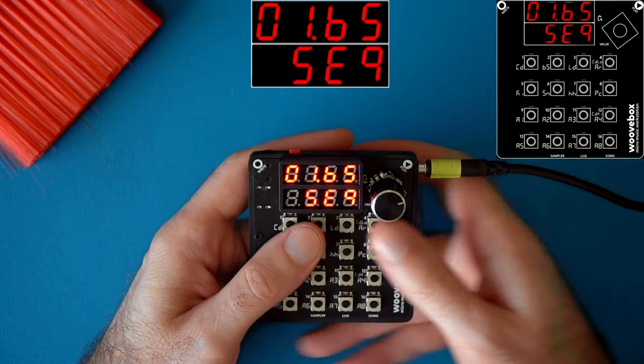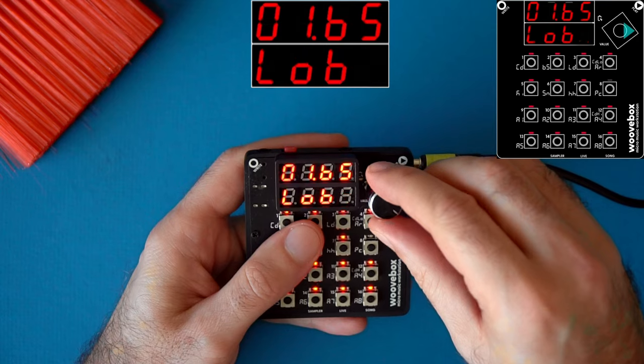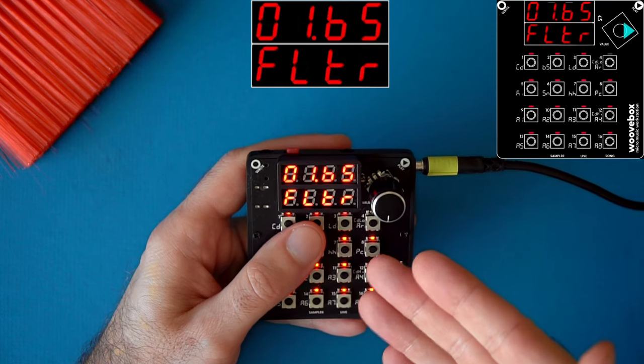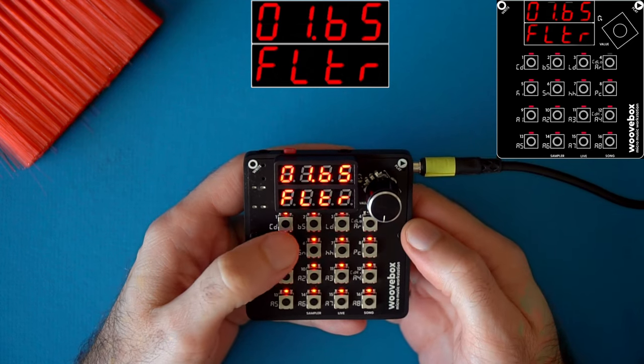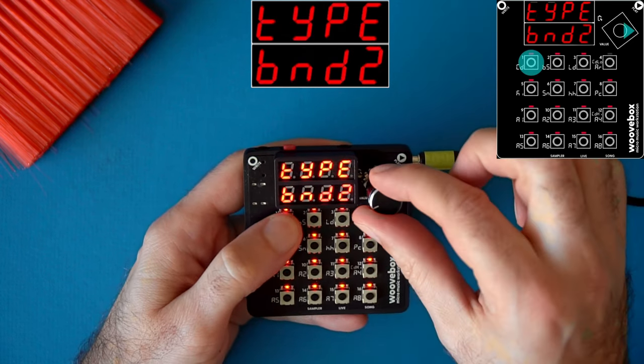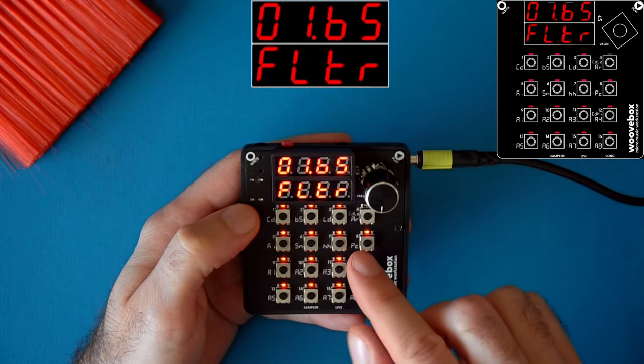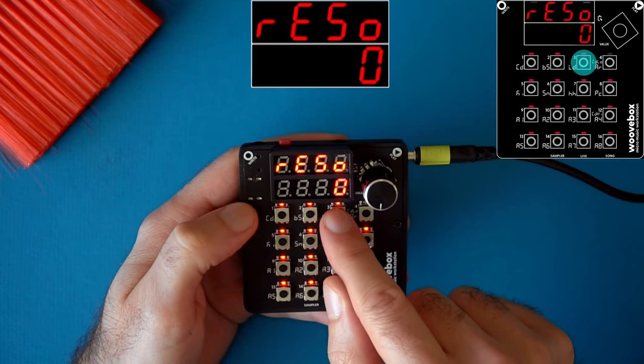You get to the filter page from the sequencer by turning the encoder to the right until you see filter. Quick refresher, each lit key is a parameter and you change that parameter by holding the key down and turning the encoder. You can get a more detailed parameter name by holding down the button.